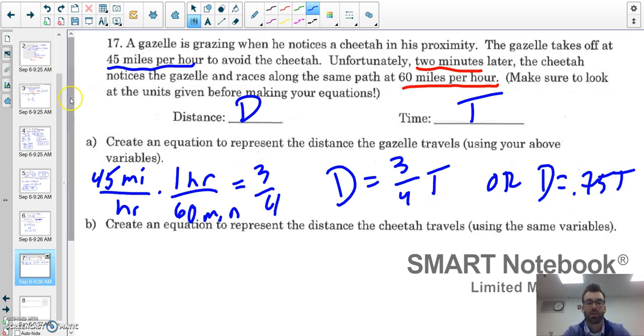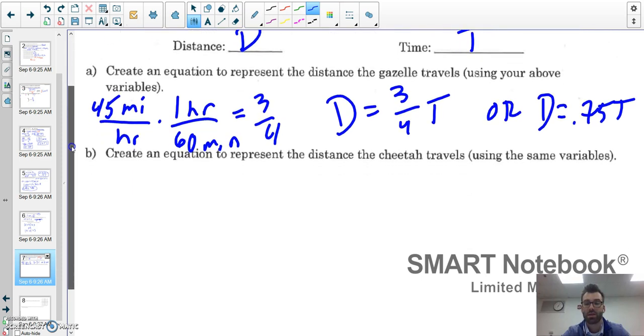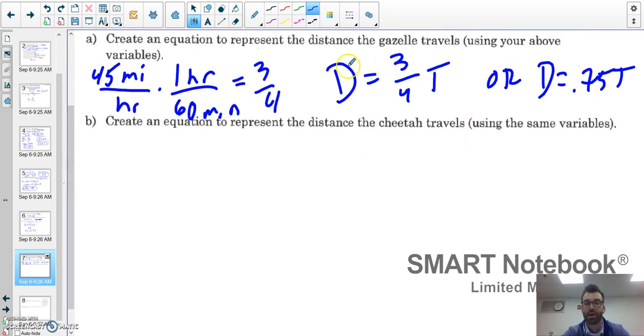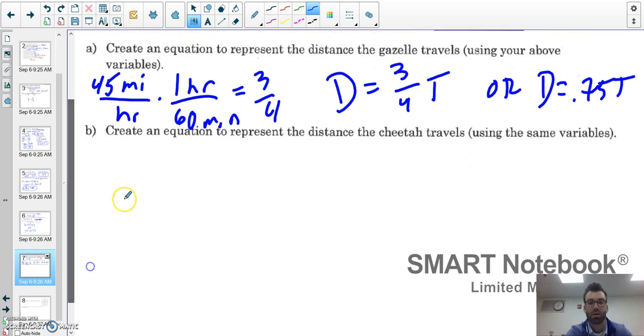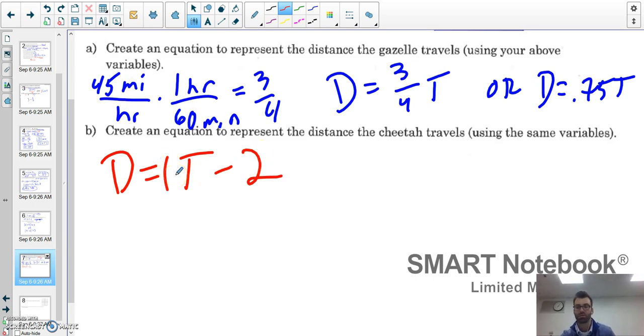Create an equation representing the distance the cheetah travels using the same variable. I know that there are 60 minutes in an hour. He's going 60 miles per hour, that's one mile per minute. 60 over 60 would give me 1, so my d for the cheetah is going to be t. We took off two minutes later, so minus 2: d = t - 2.